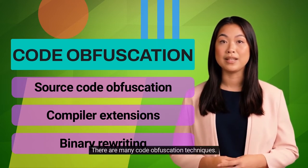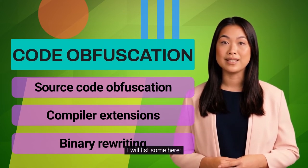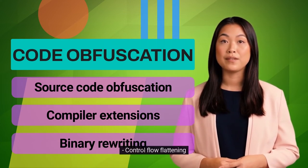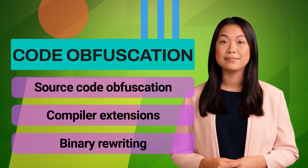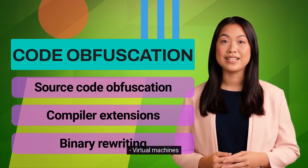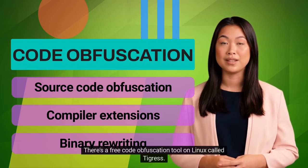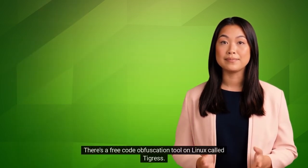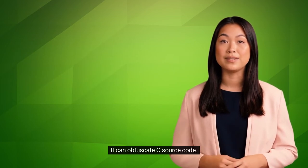There are many code obfuscation techniques — some include control flow flattening, opaque predicates, junk code, and virtual machines. There's a free code obfuscation tool on Linux called Tigris that can obfuscate C source code.